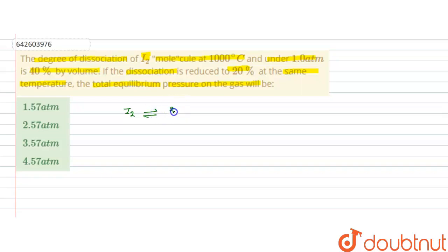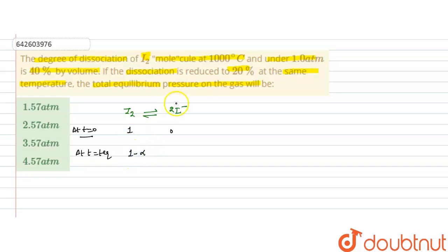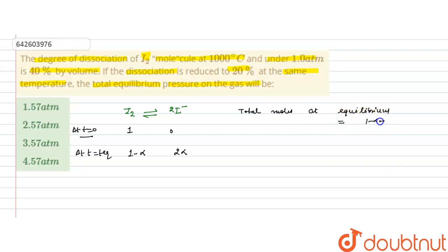If we write the dissociation of the I₂ molecule: I₂ dissociates to form 2I. At t = 0, we assume one mole of I₂ and zero moles of I. At equilibrium, with degree of dissociation α, we have (1 − α) moles of I₂ and 2α moles of I. The total moles at equilibrium is (1 − α) + 2α = 1 + α.